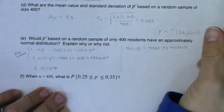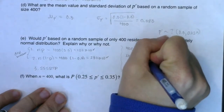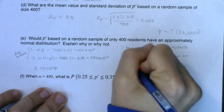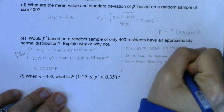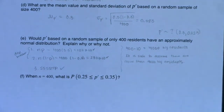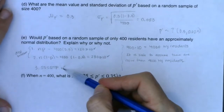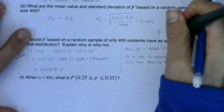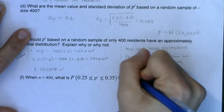All three normality assumptions are satisfied — we can confirm the sampling distribution is approximately normal. This means we can fill in that question mark with a normal distribution. The answer to this question is yes: the sampling distribution is approximately normal. We expected about 120 residents to live within a mile of a hazardous waste site and about 280 not to.